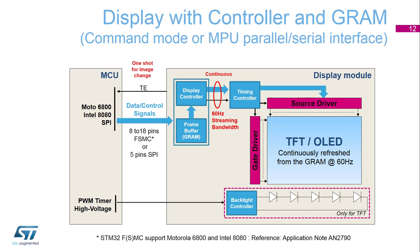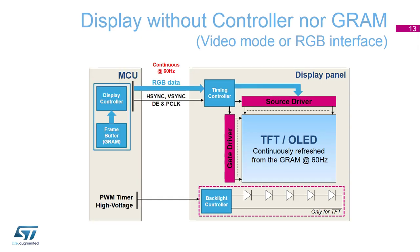The drawback is that commands should be synchronized properly to avoid the tearing effect. For that, the TE pin — tearing effect pin — is configured to generate a signal on a specific line number, chosen to take into account the latency introduced by sending the command. For displays without controller nor graphical RAM, the mode is called continuous RGB with H-sync, V-sync, DE, and P-clock. The display controller generating all the signals — H-sync, V-sync — and the frame buffer is on the MCU side. In this case, the number of pins required for raw data are 12 pins for RGB 444 color depth and 24 pins for RGB 888, plus specific pins like DE (data enable) and P-clock, meaning between 15 and 28 pins total.